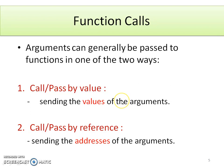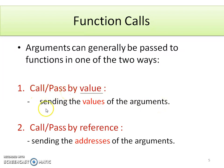Now we will go through the different types of function calls. Function calls differ according to argument passing. Arguments can be passed in one of two ways: the first type is call by value (pass by value), where we send the values of the arguments to the function. The second type is call by reference (pass by reference), where we send the addresses of the arguments to the function.